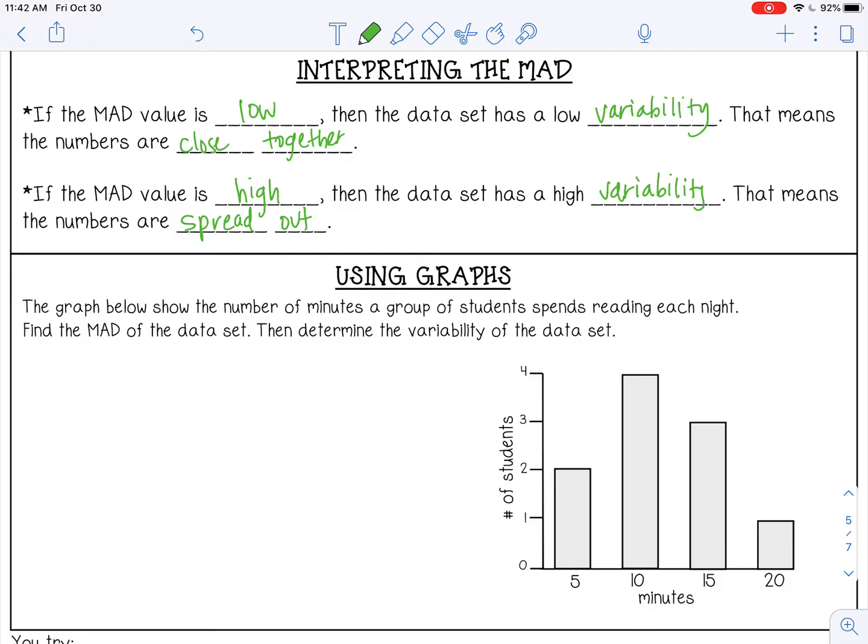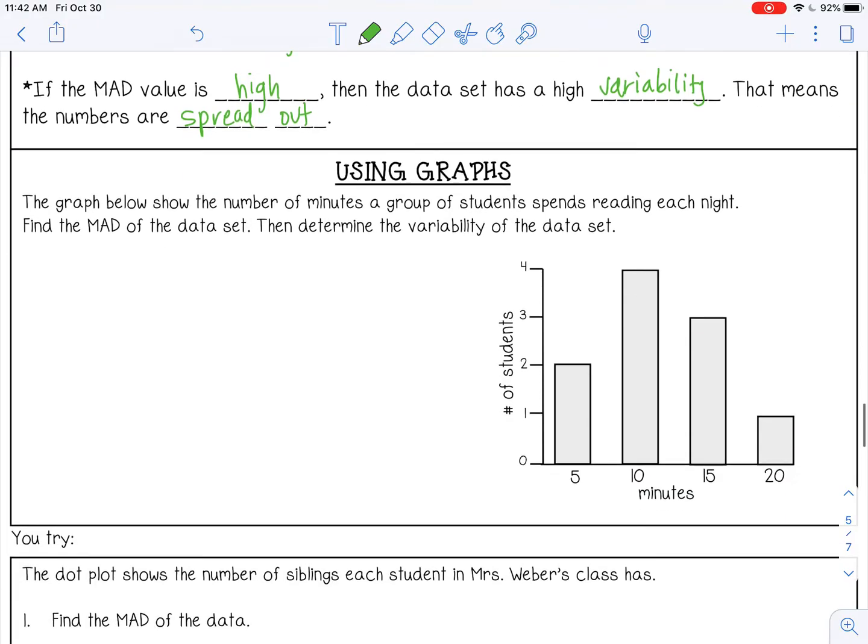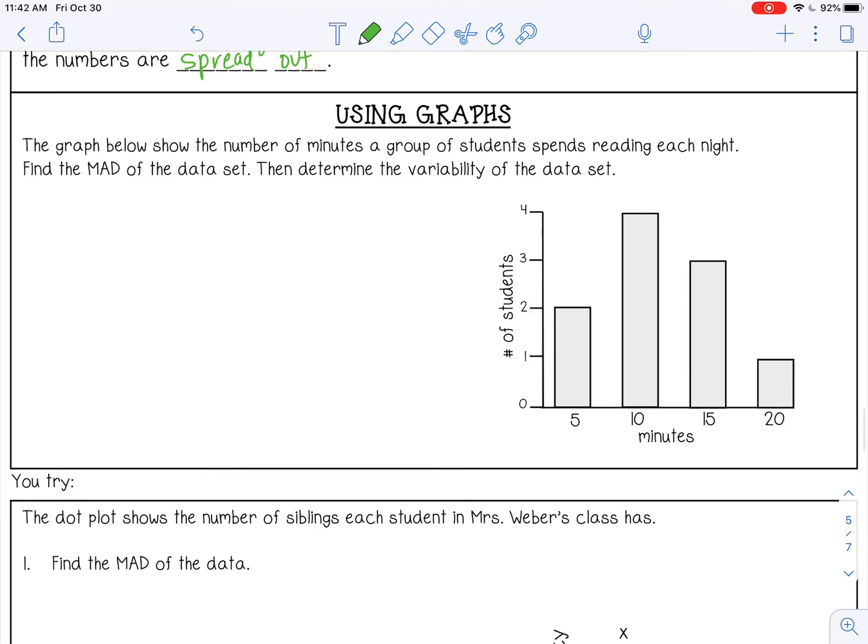So let's look at some graphs here. The graph below shows the number of minutes a group of students spends reading each night. Find the MAD of the data set, and then determine the variability. So first of all, I need to list out the numbers. I have 2 students that read for 5 minutes, 4 students that read for 10 minutes, 3 students that read for 15, and 1 student that reads for 20.